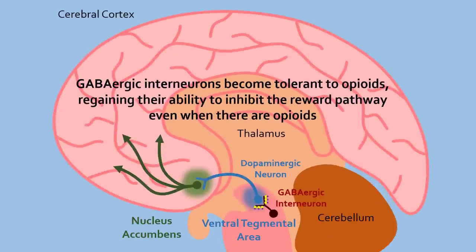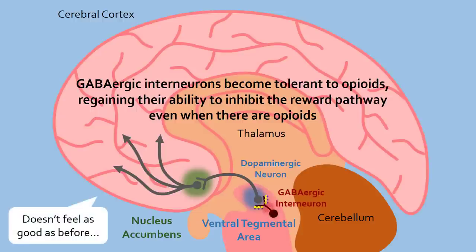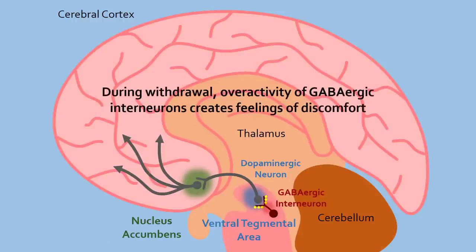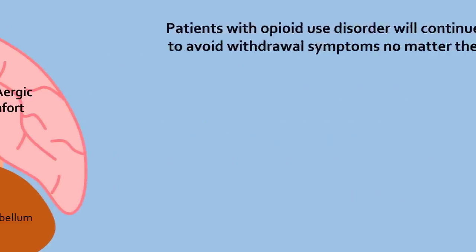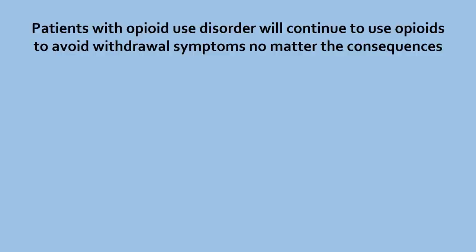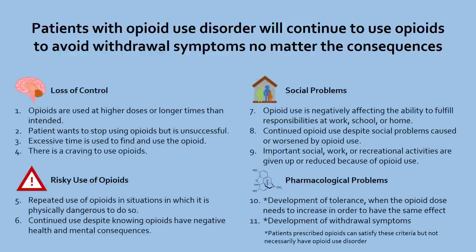Finally, the GABAergic inhibitory interneurons that keep the dopaminergic neurons in the ventral tegmental area in check also become tolerant to opioids, which means opioids do not cause as much pleasure as before. And perhaps the absence of opioids during withdrawal causes GABAergic neurons to go into overdrive, creating the feeling of discomfort. To avoid these distressing withdrawal symptoms, patients will continue to use opioids no matter the negative consequences to their lives, which fits the diagnostic criteria for opioid use disorder perfectly.